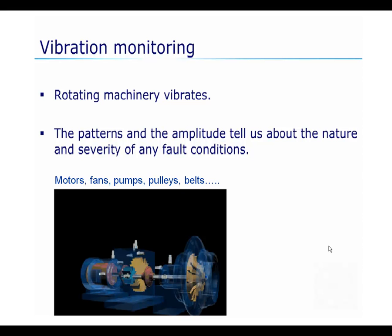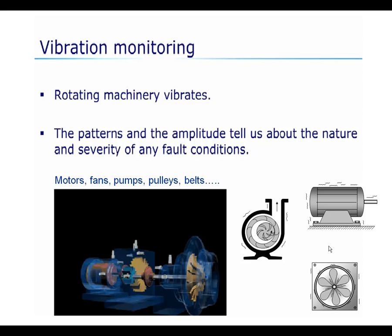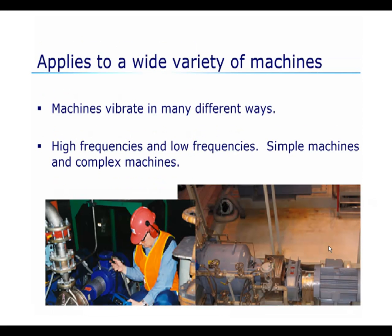If you look at vibration monitoring, it really applies to all machinery. Rotating machinery does vibrate, and those vibrations show patterns and amplitude that tell us about the nature and the severity of any fault conditions that might exist. This applies to motors, fans, pumps, pulleys, belts — a wide variety of machines. Machines vibrate in many different ways, from high frequencies to low frequencies, simple machines to complex machines, as shown in the pictures here.